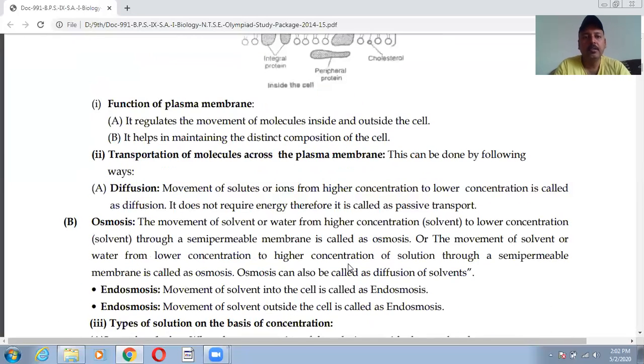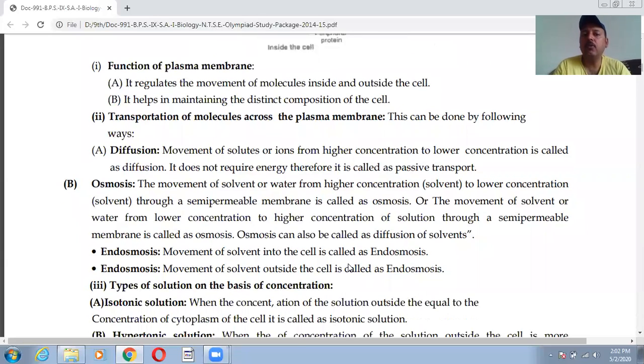Functions of plasma membrane: as we know that it is outermost covering so it allows the movement inside and outside. It regulates the movement of molecules. Secondly it helps in maintaining the distinct composition of the cell. Transportation of molecules also take place across the plasma membrane. Now the transportation of molecules across the plasma membrane can be taken by two ways: one is diffusion, another is osmosis.